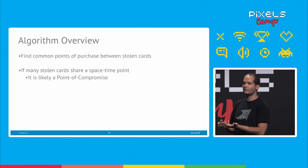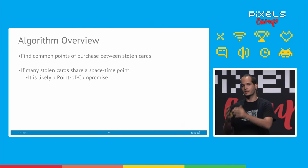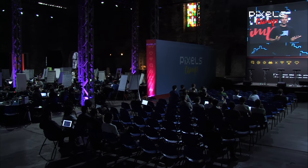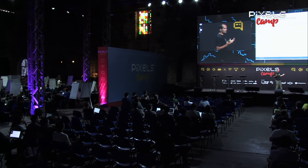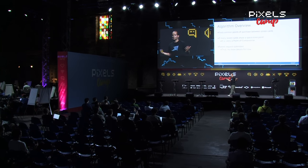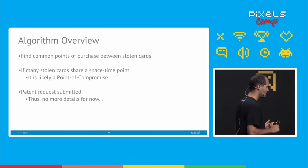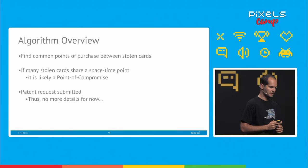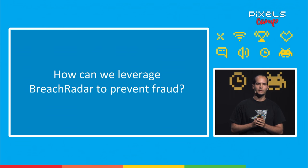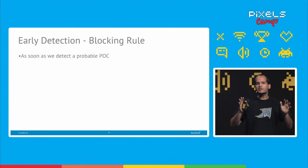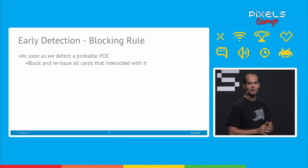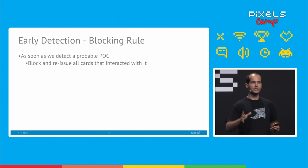If you want more details, I'm afraid I can't give you much more — this is pending a patent request, so we cannot give more details about the algorithm itself. We can, however, tell you the results. I can't tell you how the algorithm works, but if you have a black box that tells you the probability that something is a point of compromise, as soon as we know that, we can block the cards that interacted with this point of compromise and reissue new cards to the customers of the bank.